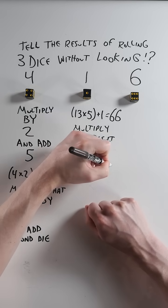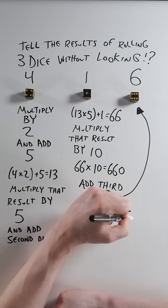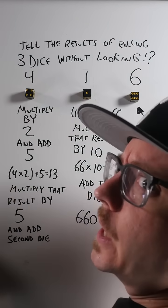So sixty-six times ten equals six hundred sixty. And add the third die. Six-six-six.